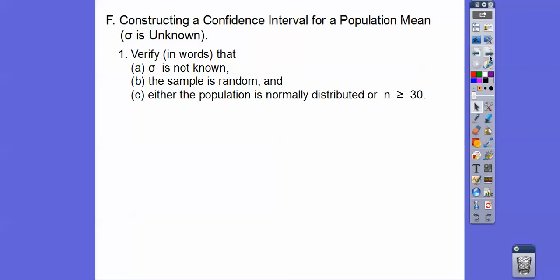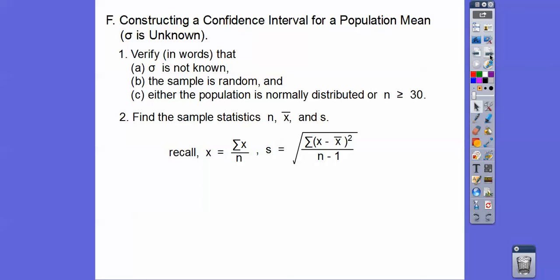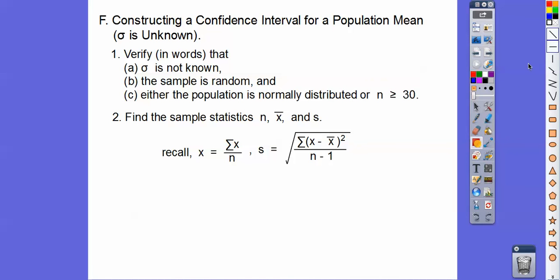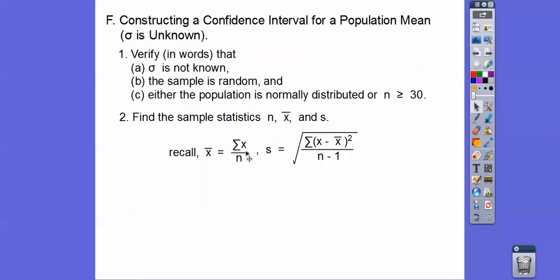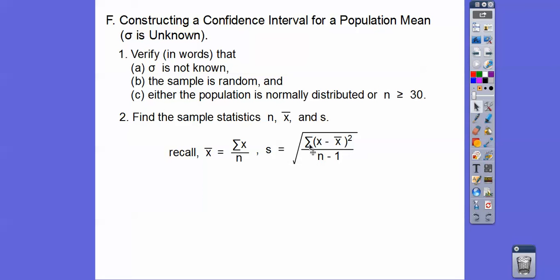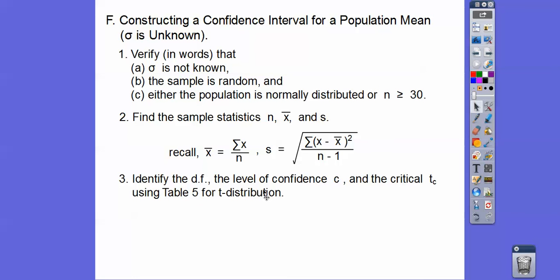Verify that the sample is random, and either the population is normally distributed or the sample size is greater than or equal to 30, because of the central limit theorem. Then find the sample mean x-bar and the sample standard deviation. The sample mean is found by adding up all the x's and dividing by n. The sample standard deviation is the sum of each x minus the sample mean squared, divided by n minus 1.